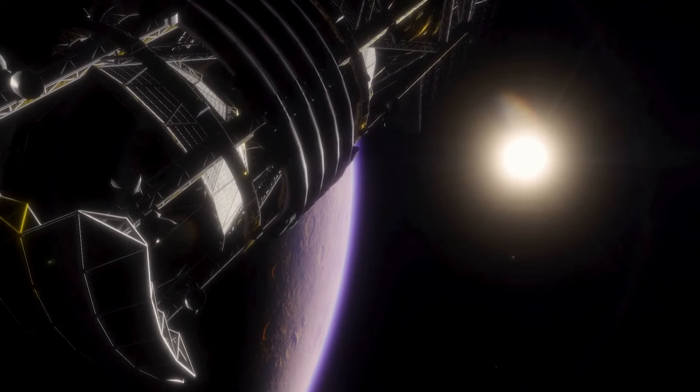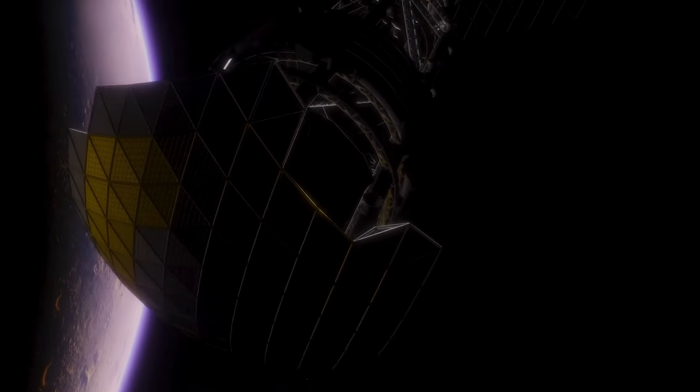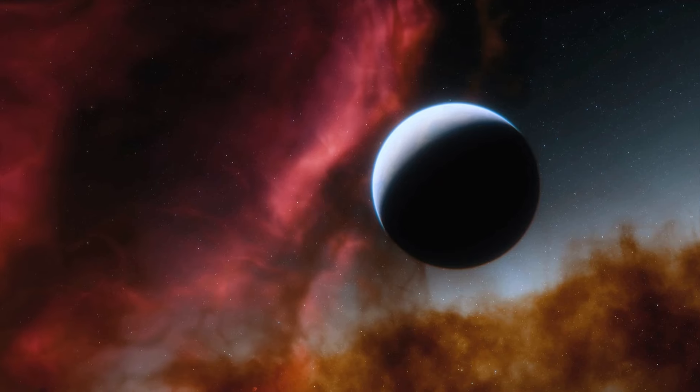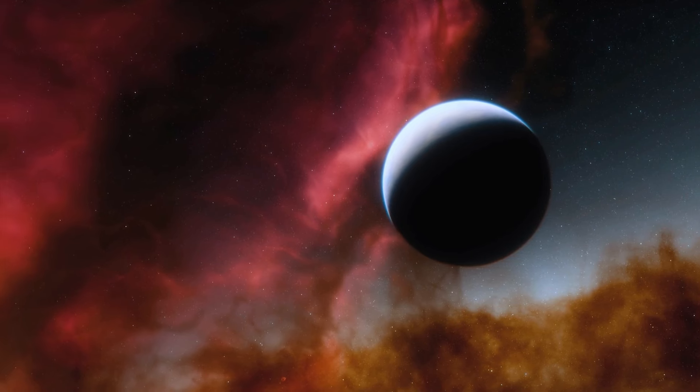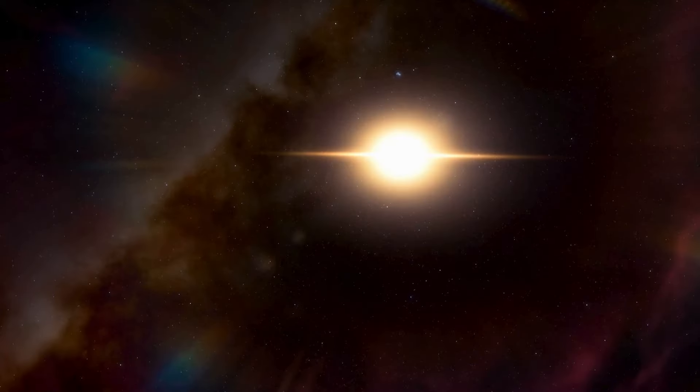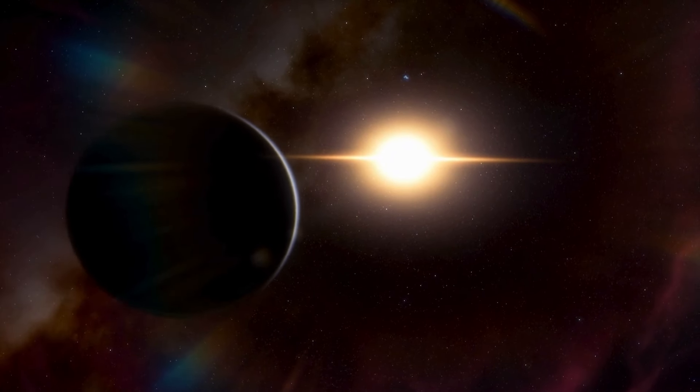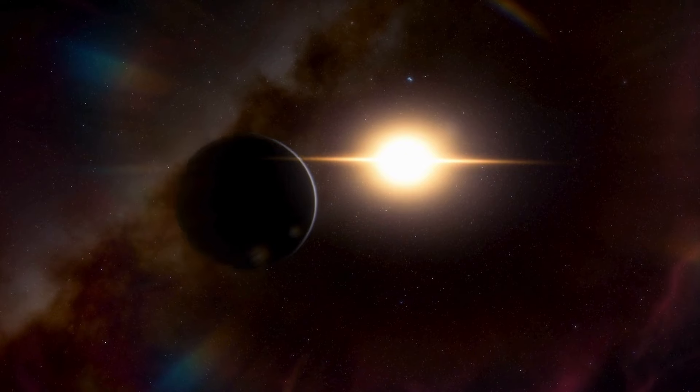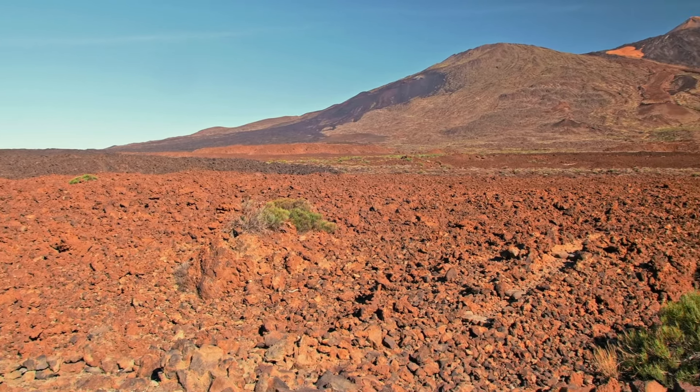As we venture beyond our solar system, we encounter a multitude of exoplanets orbiting stars other than the Sun. With over 206 trillion stars in the universe, the possibilities are endless. Some exoplanets even roam freely, untethered to any star, like rogue travelers in space. Yet, among them all, Proxima Centauri b stands out as a truly remarkable and enigmatic planet.